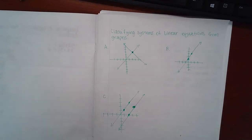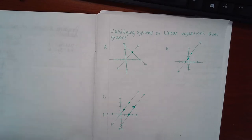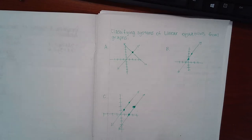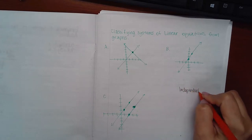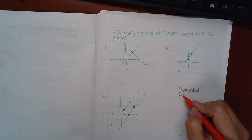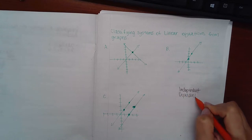In this video we're going to be talking about classifying systems of linear equations from graphs. There are two types of labels for systems of equations: independent and dependent. This is one type of label.